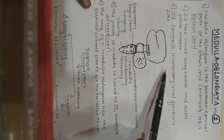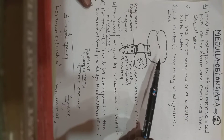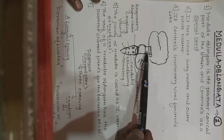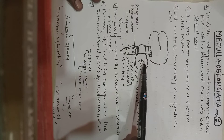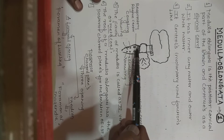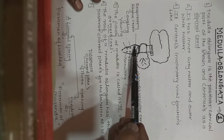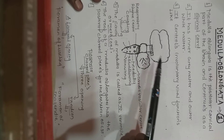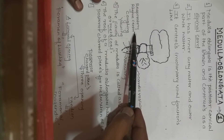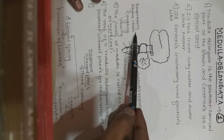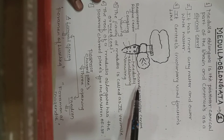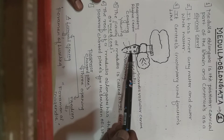The medulla oblongata controls involuntary vital functions. Looking at the brain diagram — this is the cerebrum, diencephalon, midbrain, pons varolii, cerebellum, and finally the posterior region, the medulla oblongata. Many involuntary centers lie in the medulla, including the respiratory rhythm center and the cardiovascular center.